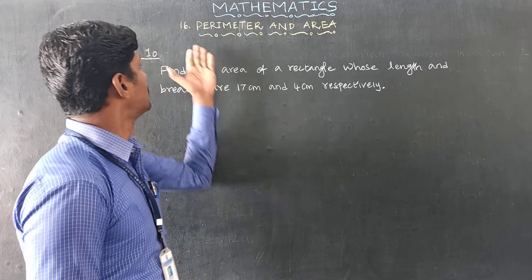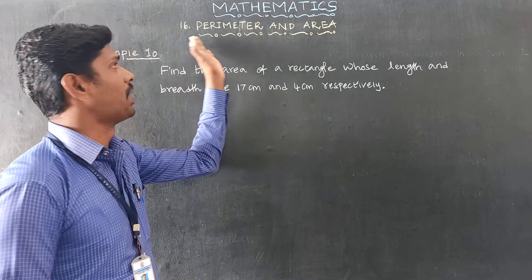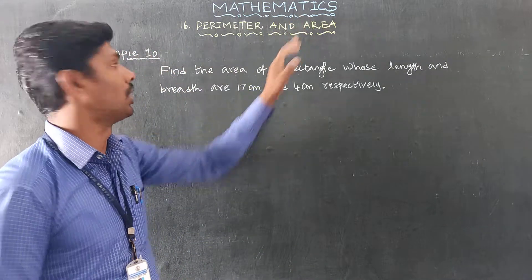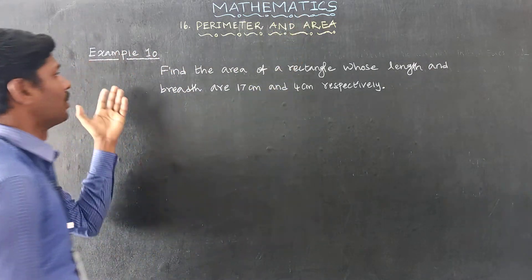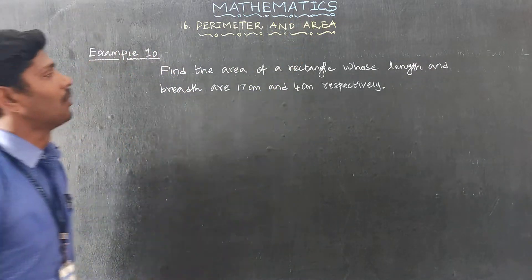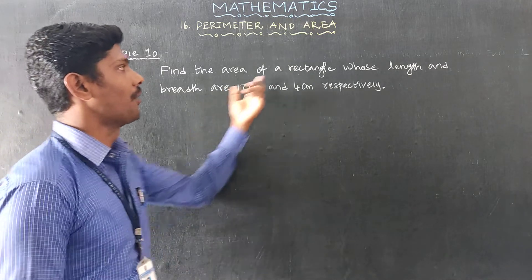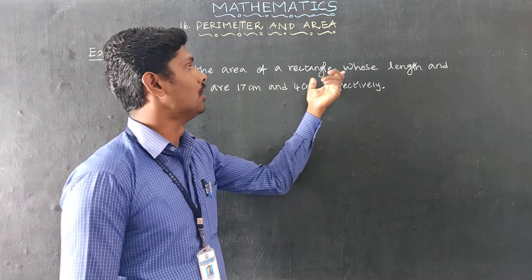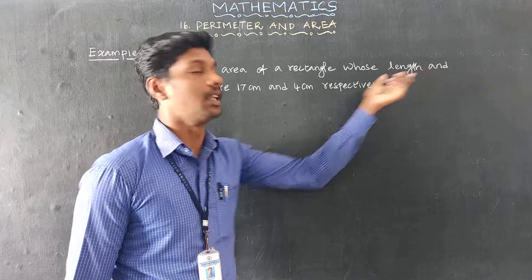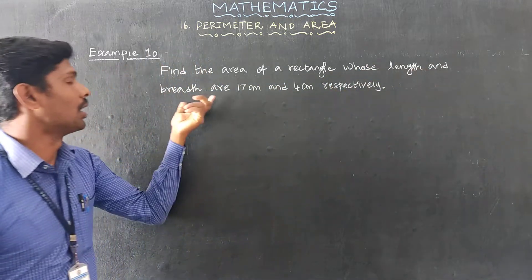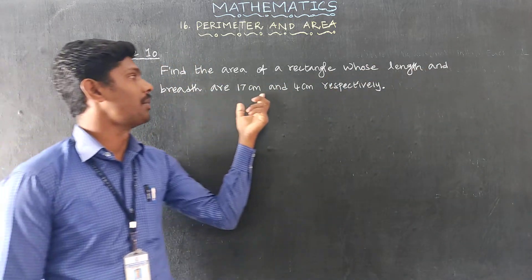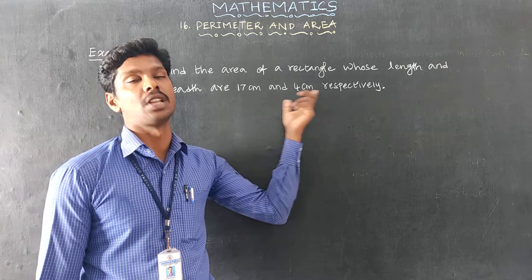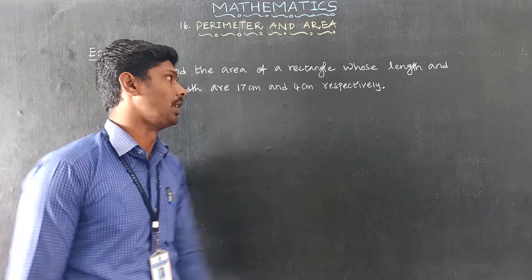Hey student, perimeter and area. Examine: find the area of a rectangle whose length and breadth are 17 cm and 4 cm respectively.